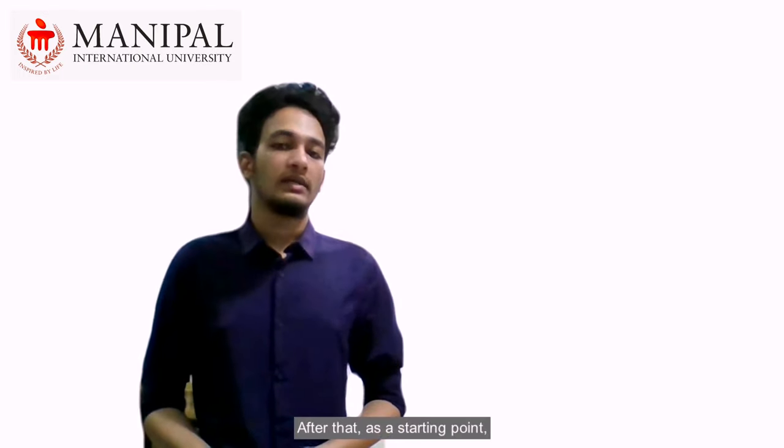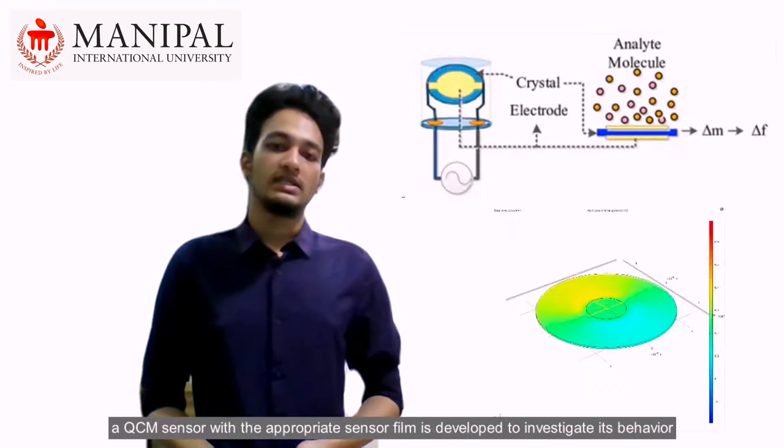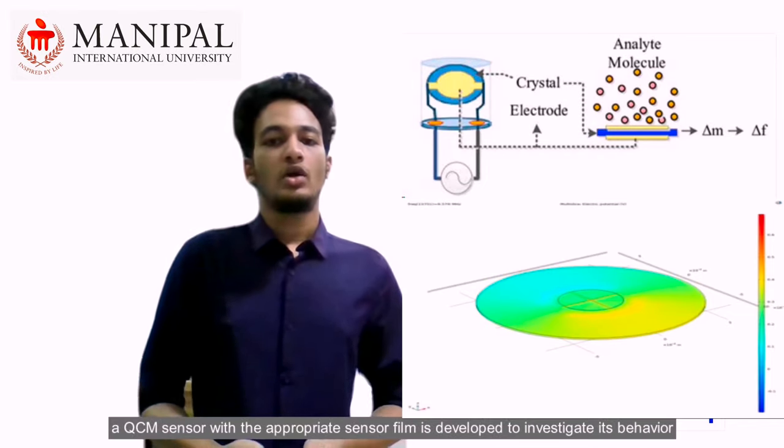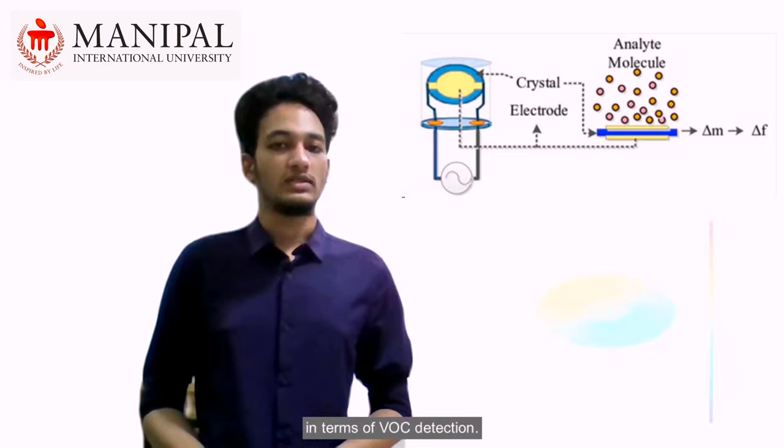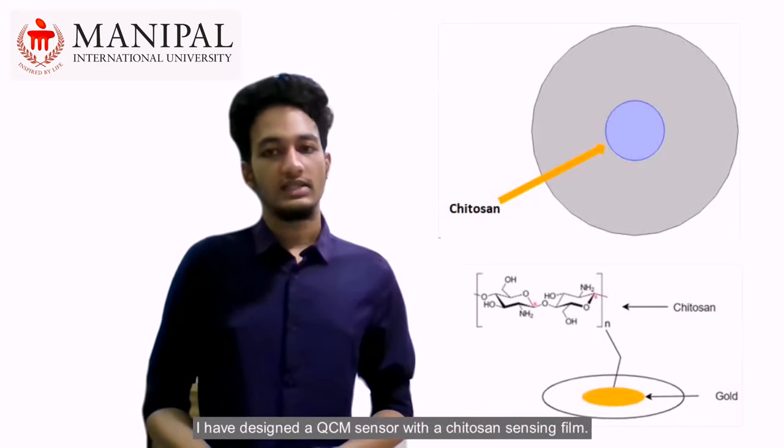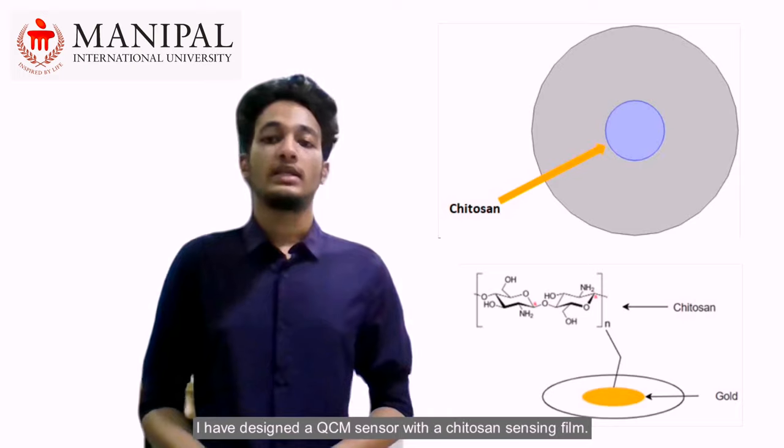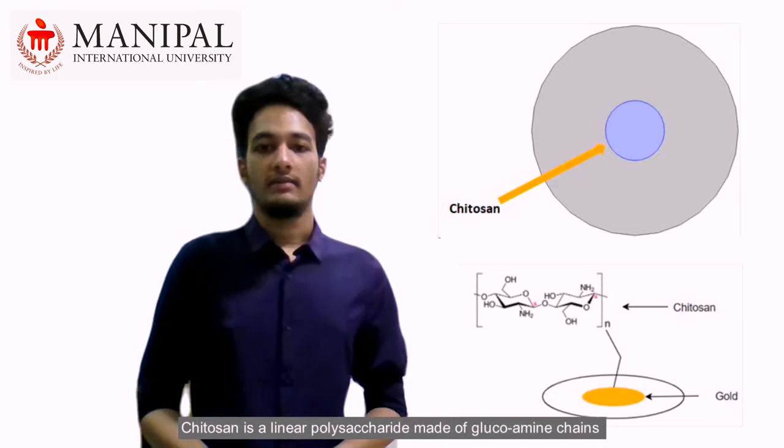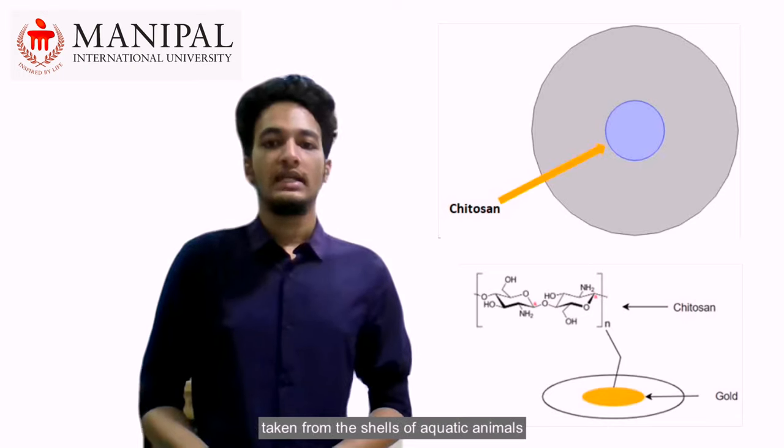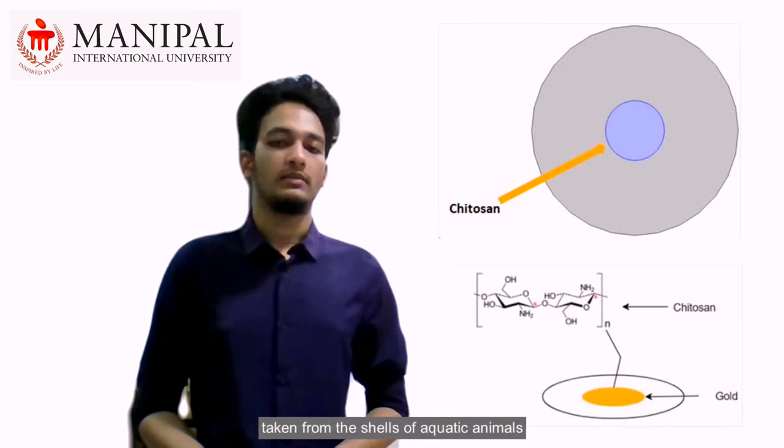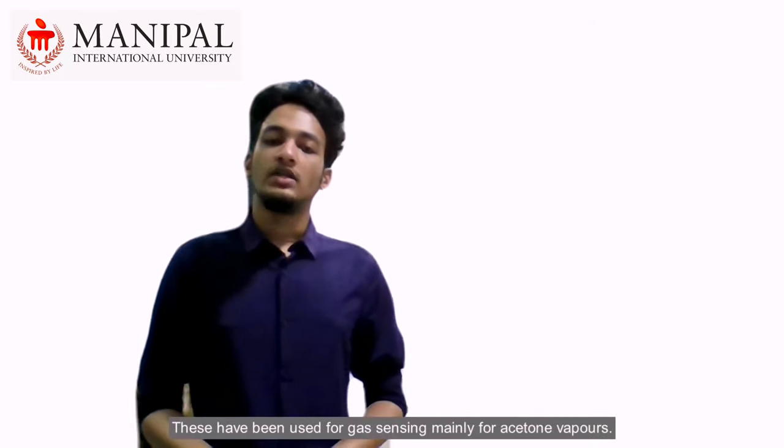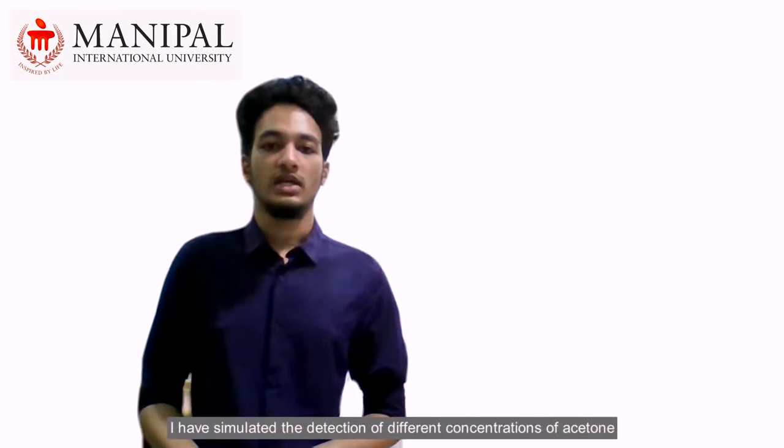After that, as a starting point, a QCM sensor with the appropriate sensor film is developed to investigate its behavior in terms of VOC detection. I have designed a QCM sensor with a chitosan sensing film. Chitosan is a linear polysaccharide made of glucosamine chains taken from the shells of aquatic animals such as seashells and lobsters. They have been used for gas sensing mainly for acetone vapors.